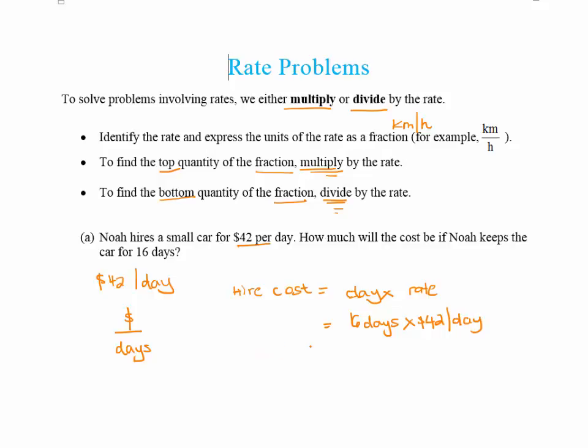And what you could do is, whilst I'm writing this out, you could quickly get your calculator and see if you can get the answer before me. So we're going 16 times by 42, and the answer to that is going to be $672.